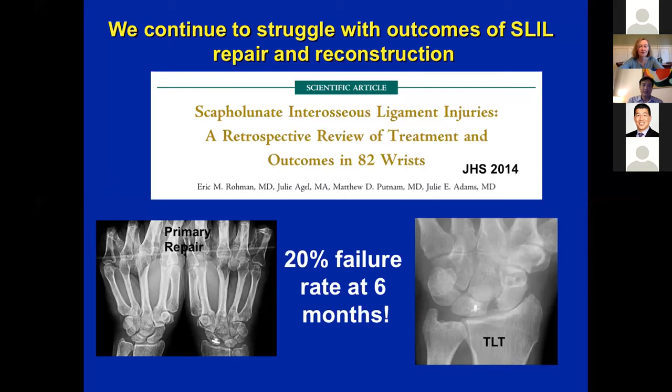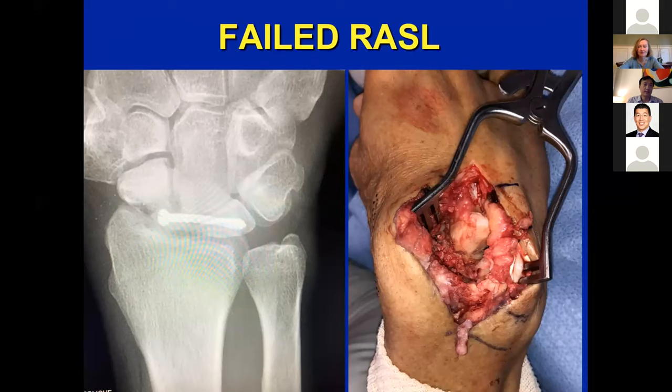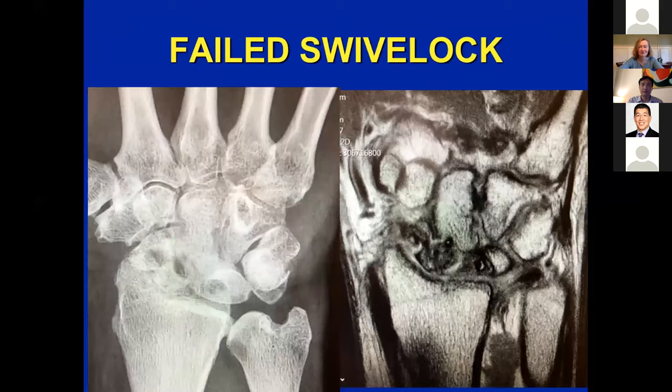Some of these cases don't work out. I saw a RASL case a couple years ago where the screw had cut out and fragmented the proximal scaphoid, requiring a salvage procedure. I also saw a swivel lock case earlier this year — right before the pandemic — with fragmented scaphoid and lunate, awaiting surgery.